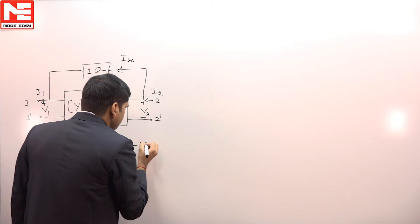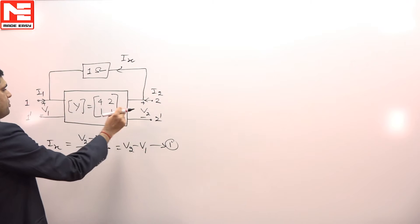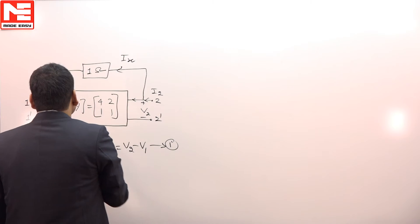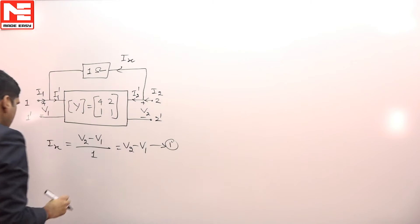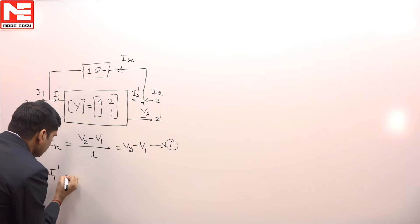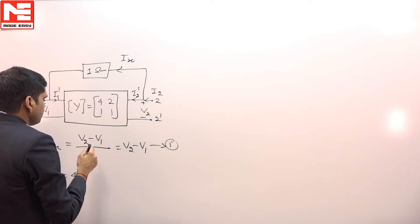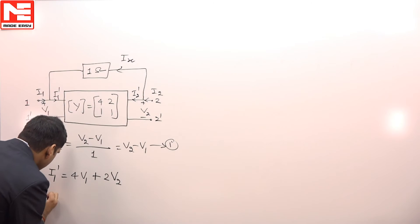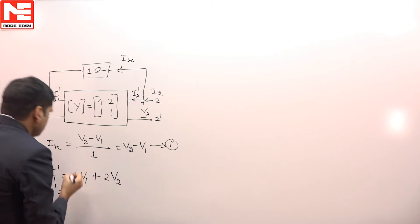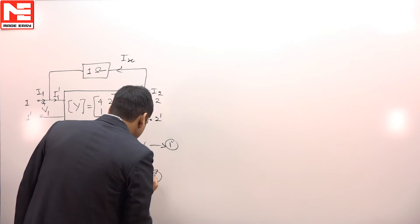Now for this Y parameter, V1 and suppose here the current is i1 dash and here the current is i2 dash. So i1 dash can be written as i1 dash equals Y11 that is 4V1 plus Y12 that is 2V2. And i2 dash can be written as V1 plus V2. These are equation 2 and equation 3.